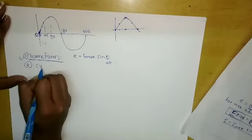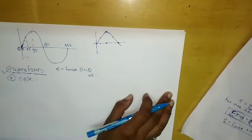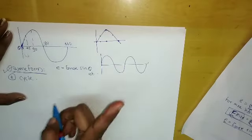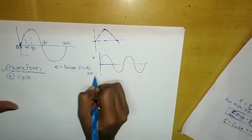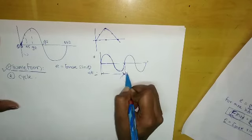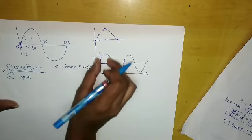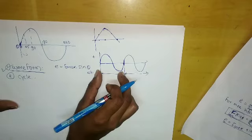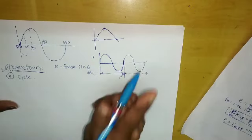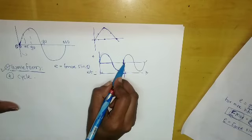One complete set of positive and negative values of an alternating quantity is known as a cycle. On the waveform, the positive half and the negative half together form one cycle. After completing one cycle, the next cycle begins.